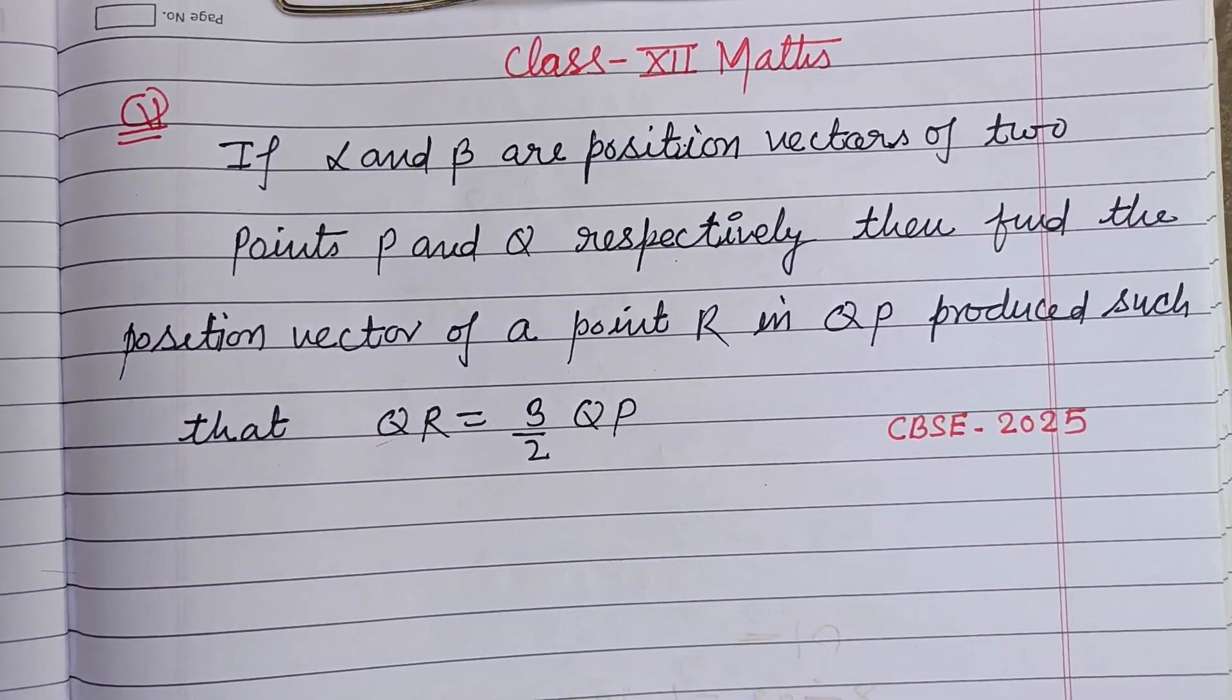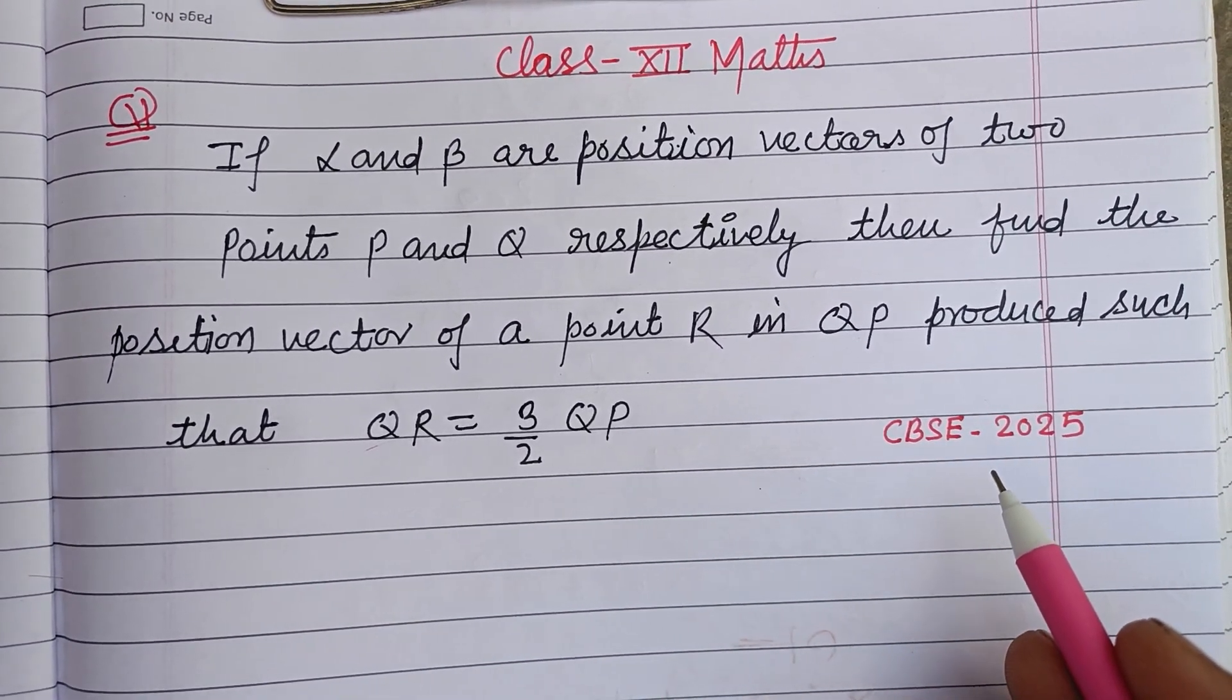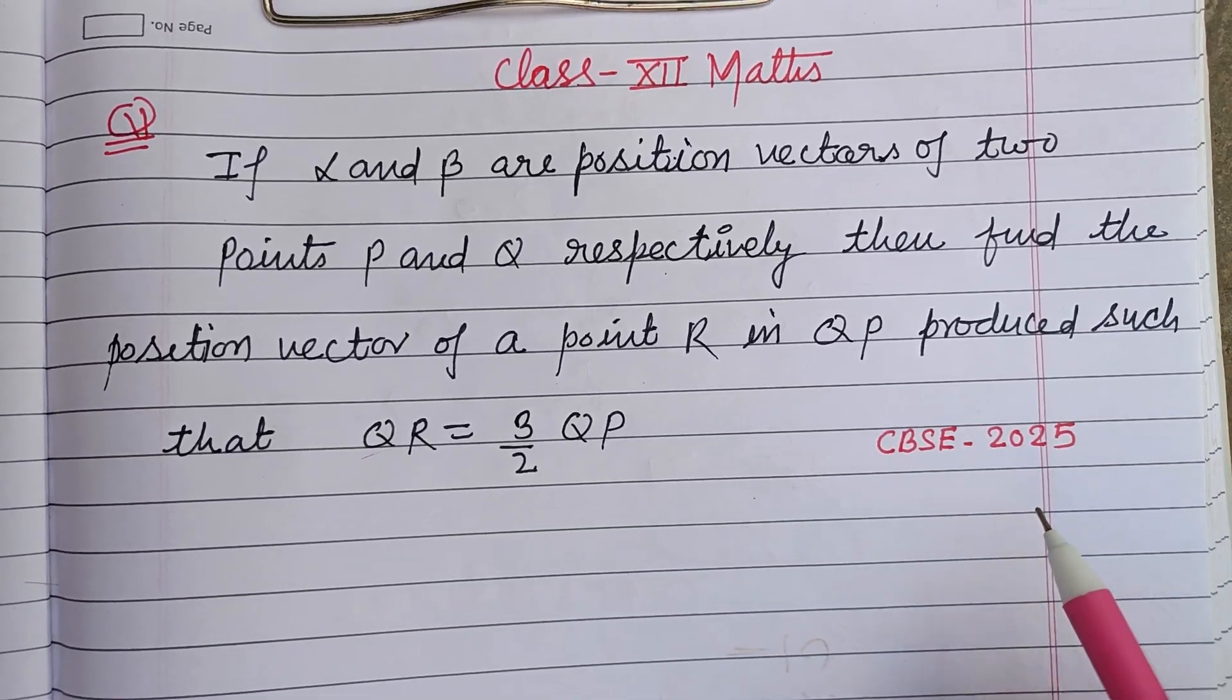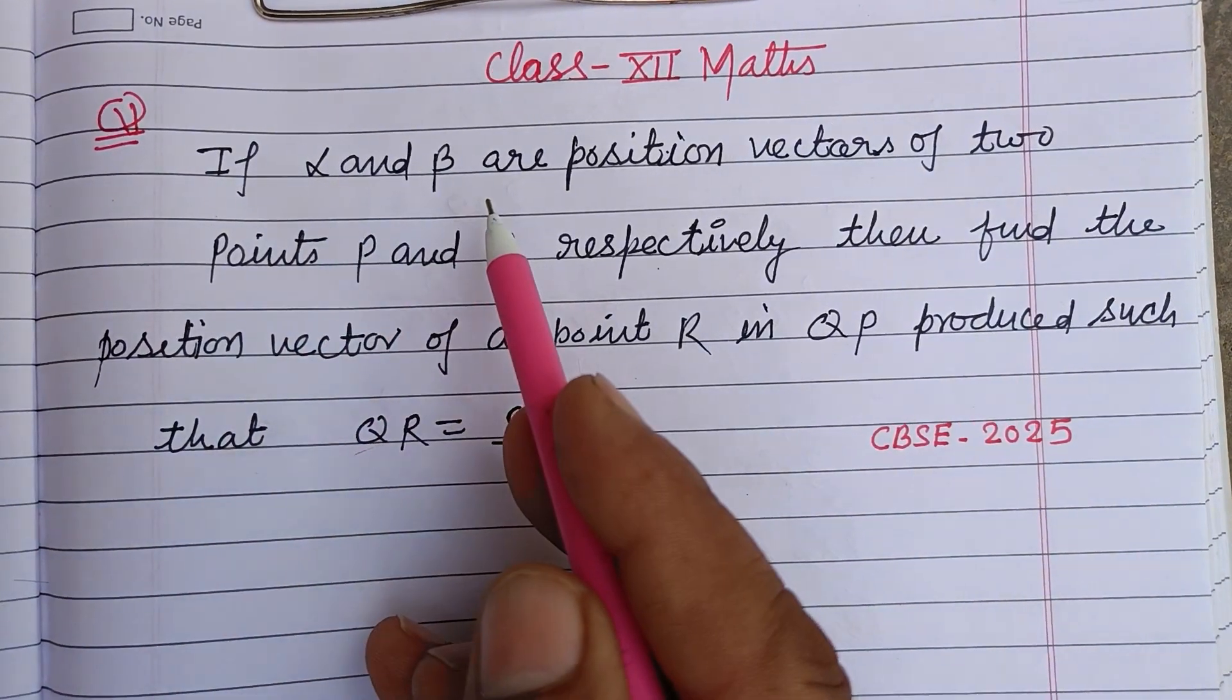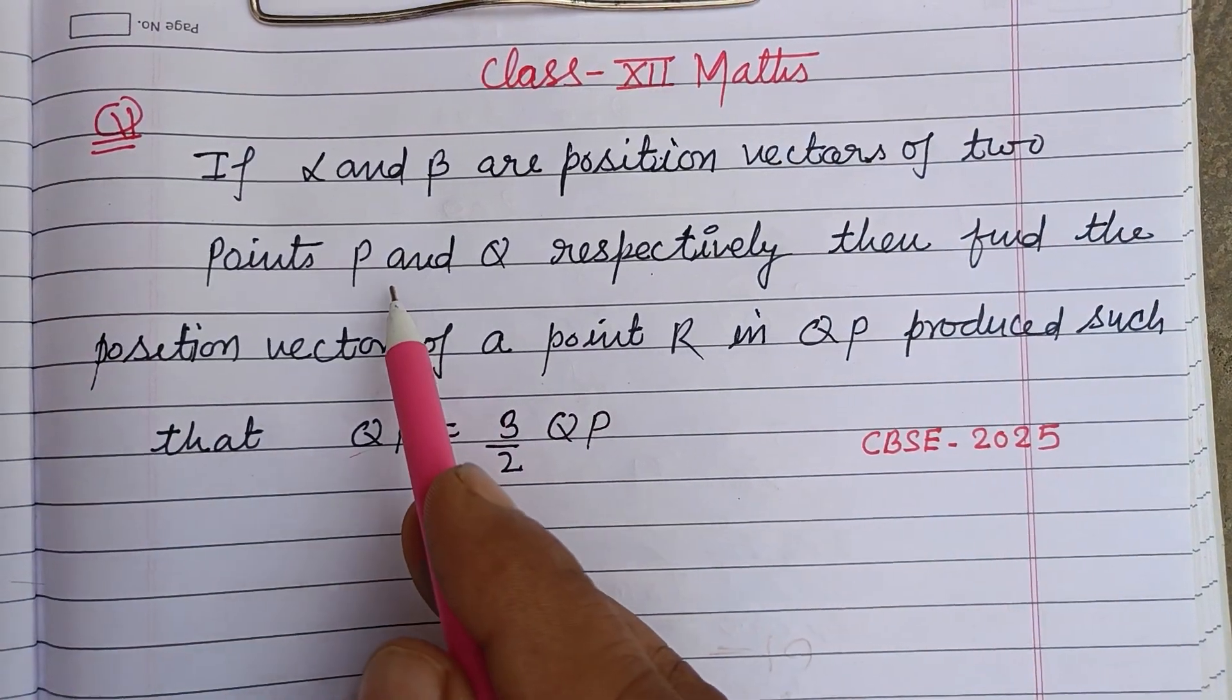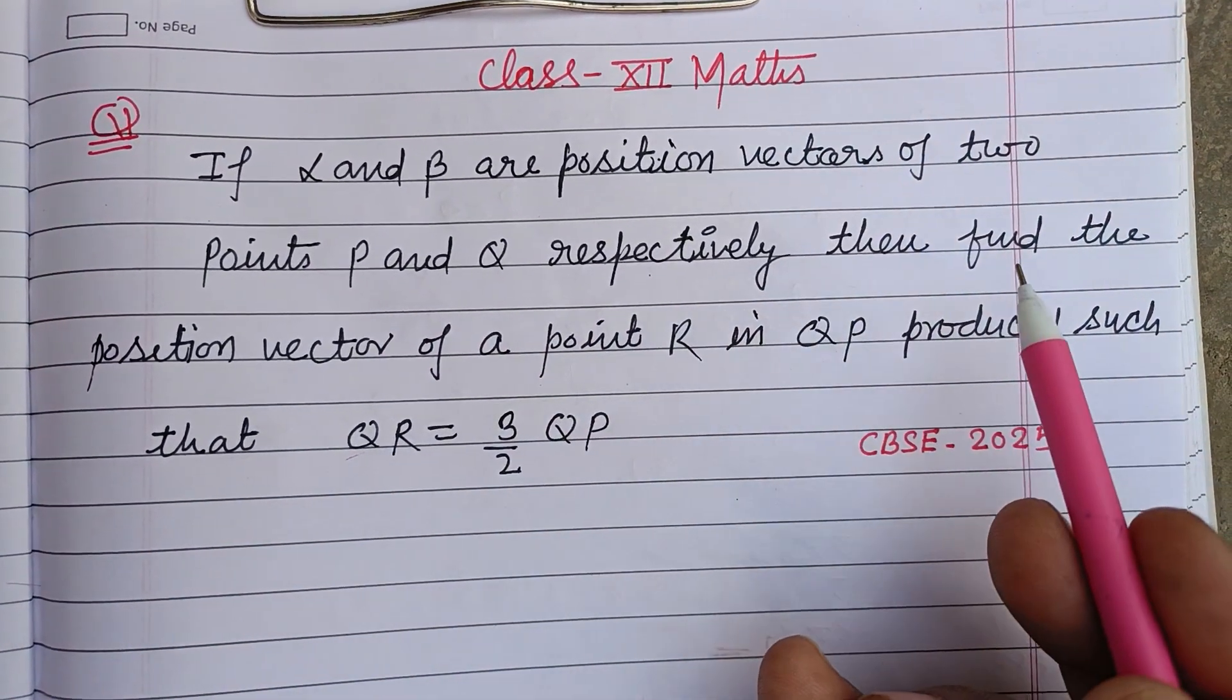Hello viewers, warm welcome to this YouTube channel. This is a question from CBSE Board Exam 2025, Class 12: If α and β are position vectors of two points P and Q respectively, then find the position